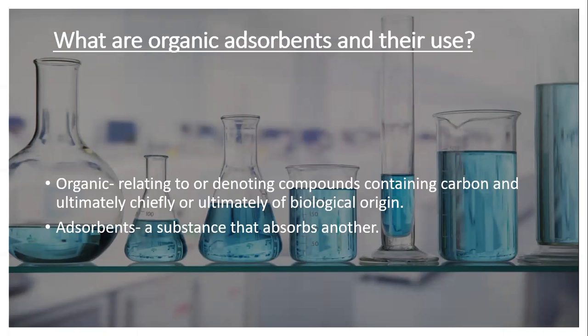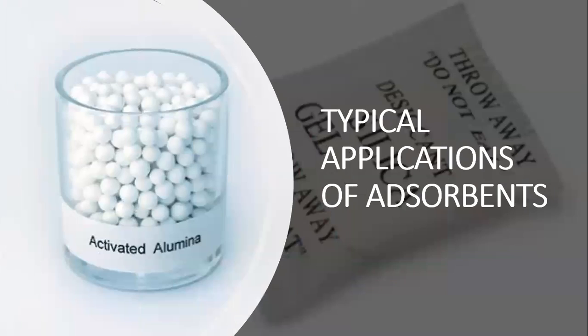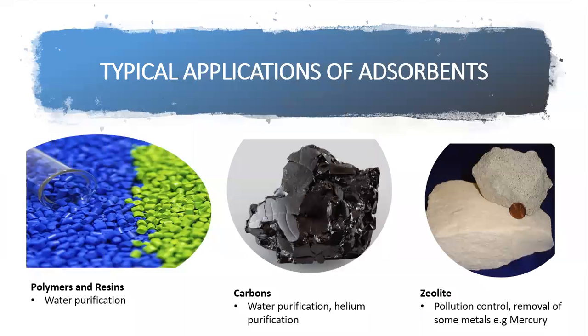Here are absorbents and their typical uses. Activated alumina is used for removal of hydrochloric acid from hydrogen and of fluorine in the alkylation process. Carbons are used for water purification, purification of helium, and cleanup of nuclear off-gases. Zeolites are used for pollution control, including the removal of some metals. And lastly, polymers and resins are used for water purification.